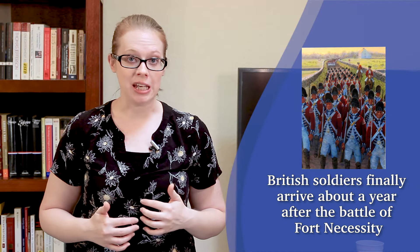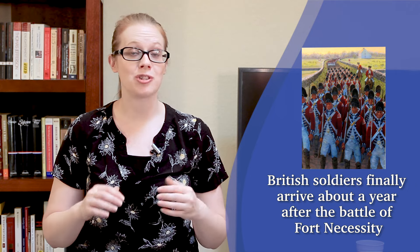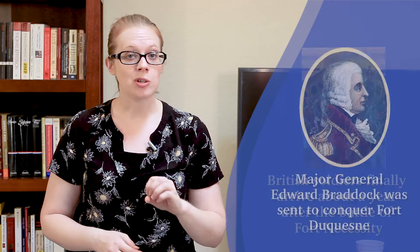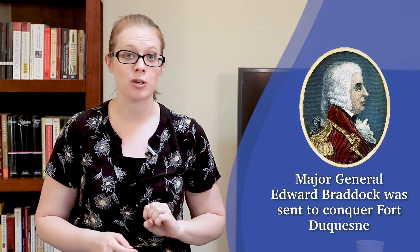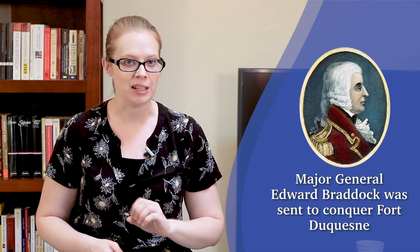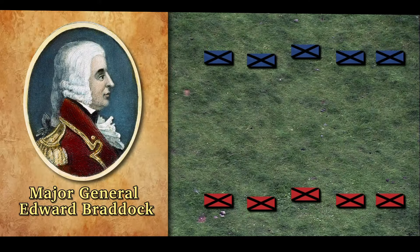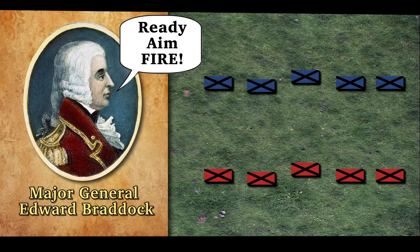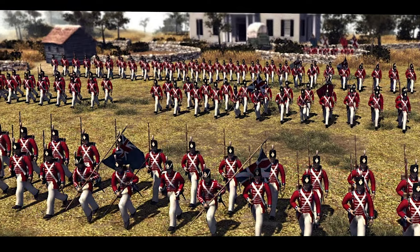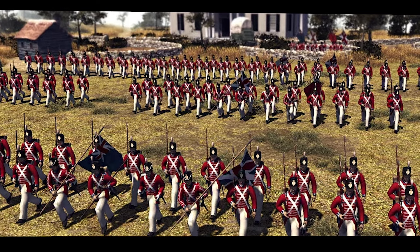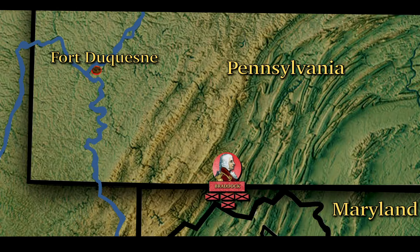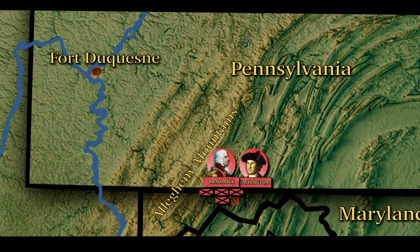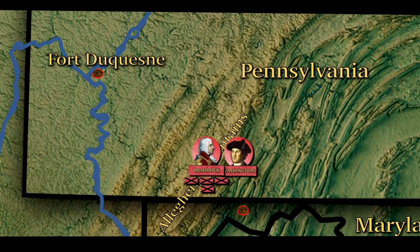About a year after fighting began at the Battle of Fort Necessity, British soldiers finally arrived in North America. General Edward Braddock, a highly respected British general, was sent to lead the Virginia Regiment to conquer Fort Duquesne once and for all. Braddock was an old-school British general who believed war should be fought in open fields with soldiers standing in straight lines. To capture Fort Duquesne, Braddock wanted to march his men — including George Washington, who served as his assistant — 110 miles across the Allegheny Mountains with 10 cannons during the middle of summer.